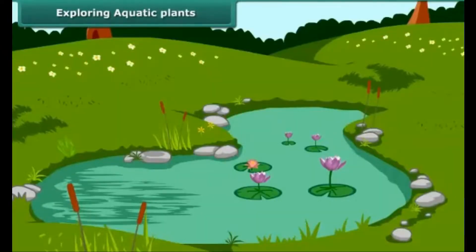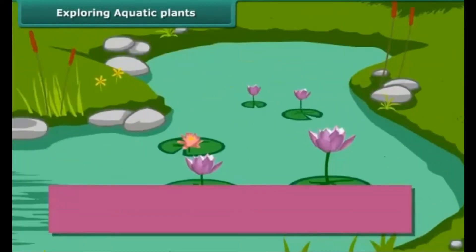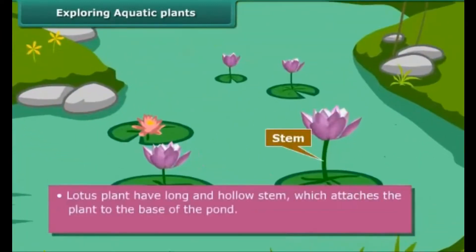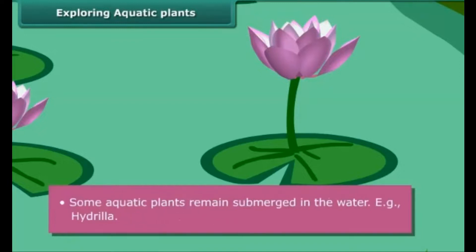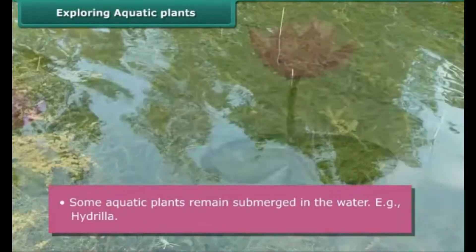You might have seen lotus floating in ponds and lakes. These plants show various adaptations to live in water. Lotus plants have long and hollow stems, which attach the plant to the base of the pond. Roots are short. Leaves are wide and disc-shaped, which helps the plant to float on the water surface. Some aquatic plants remain submerged in the water — for example, hydrilla.